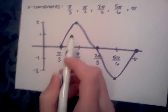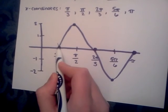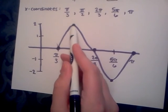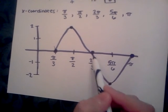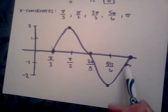To graph, you start with pi over 3, and then your amplitude is 2. And then it's 2 pi over 3, 5 pi over 6, and pi.